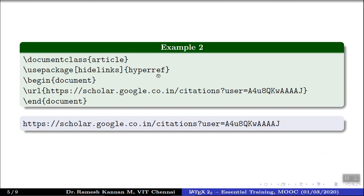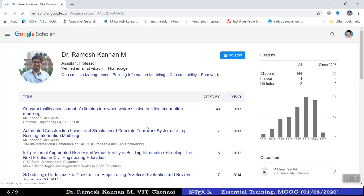Another important package is hyperref. If you incorporate many URLs or hyperlinks in your document, this is essential. Without the hidelinks option, the output will show a box frame around every URL. In this example, the document class is followed by the package, then begin document and end document, and \url{} within brackets — whatever URL you provide gets printed as a hyperlink.